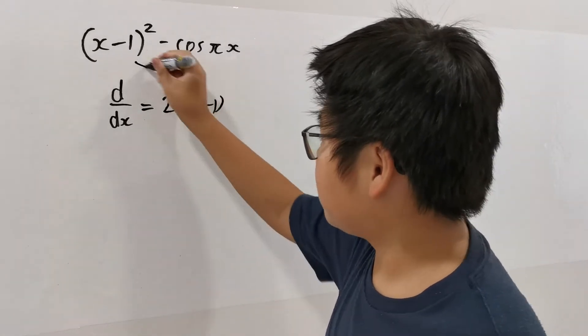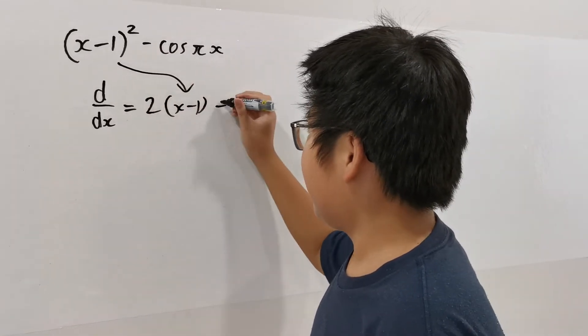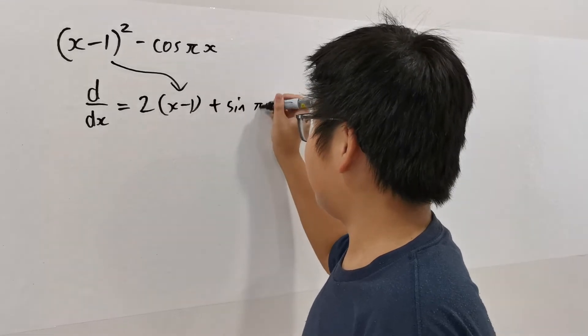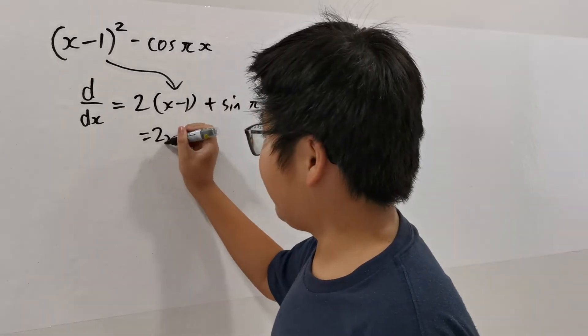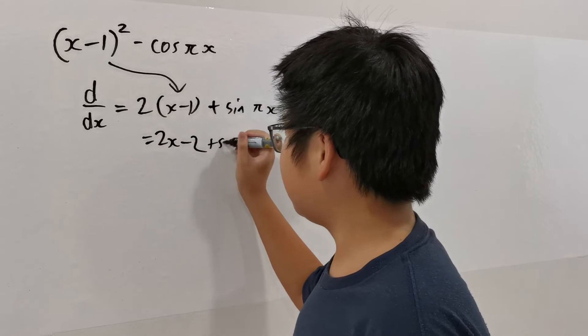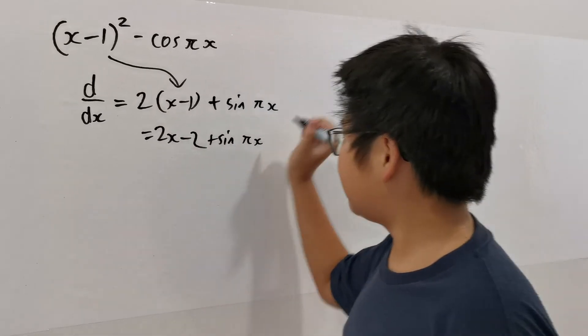Using the chain rule, x minus 1 squared will differentiate to this and then plus sine pi x equals to 2x minus 2 plus sine pi x.